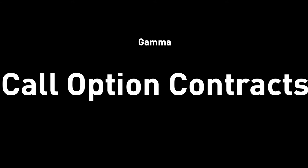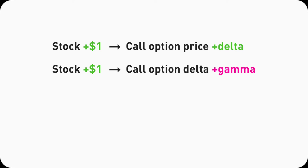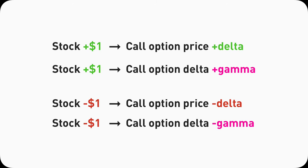Gamma and call option contracts. In the case of call options, for every single dollar the stock increases, the call option contract price will go up by the Delta amount, and at the same time Delta will also go up by the Gamma amount. On the other hand, if the stock drops $1, the call option contract price will go down by the Delta amount, and Delta will drop by the Gamma amount.